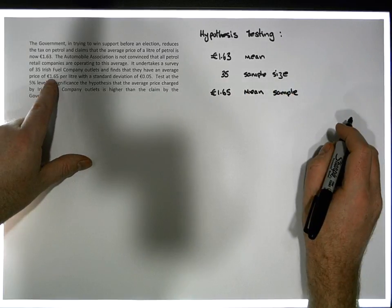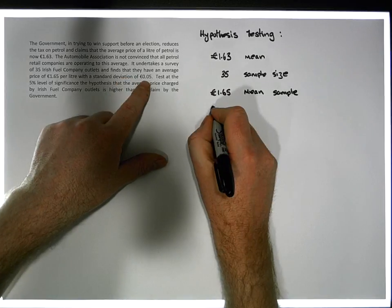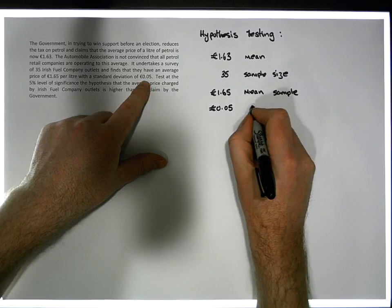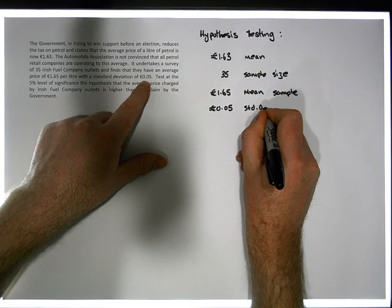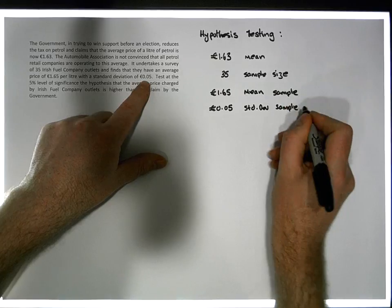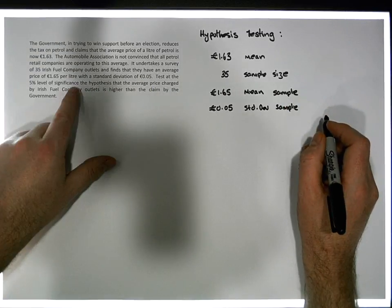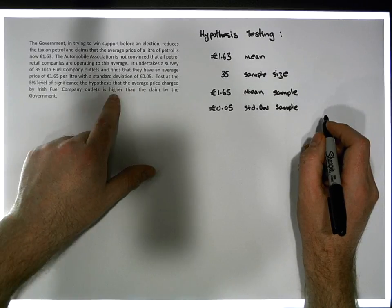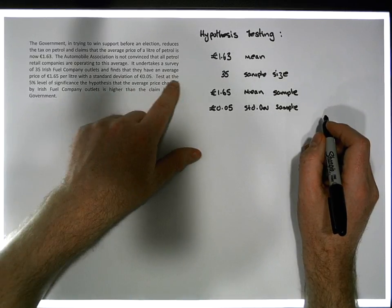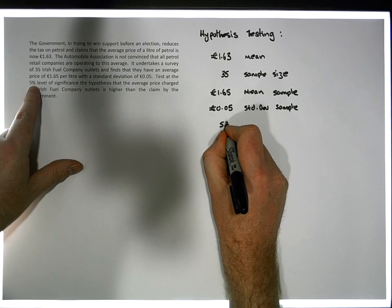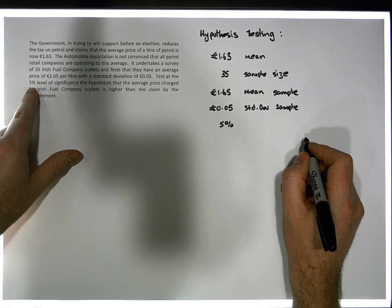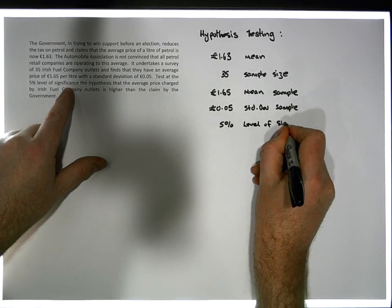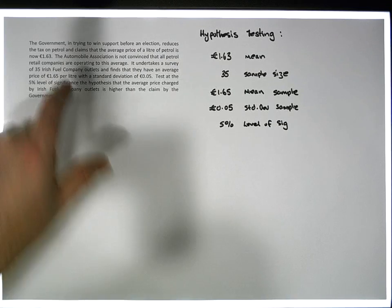With a standard deviation of €0.05 — that's the standard deviation of my sample. And finally, we need to test at the 5% level of significance. That 5% is my level of significance, alpha. So those are the numbers being provided from the scenario.